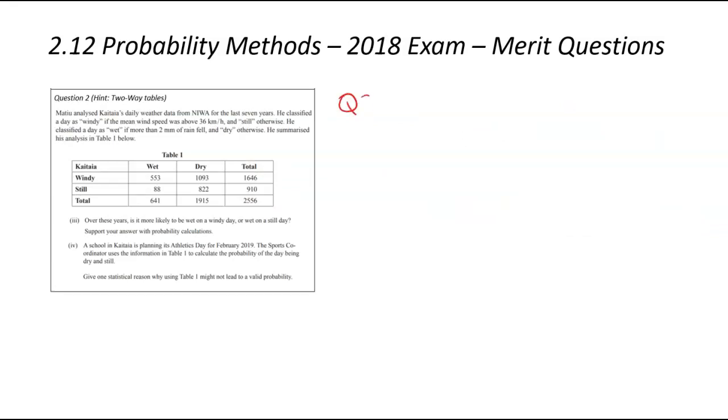We're now looking at question two. We're going to start with part iii. Reading through the context, we'll go through it quick. So we've got some data, weather data from NIWA. It's classified the days as windy or still based on the speed of the wind. It's classified if they are wet or dry based on the rainfall. Here are the results in the table. And you can see, there you go, it's a windy or still day, and that's the wet and the dry days up there. So over the years, is it more likely to be wet on a windy day or wet on a still day? Your answer should be supported with probability calculations. So to this question, we need to calculate the probability of those two things that are underlined, and then we need to check which one has a bigger probability, and that is the event that is more likely to occur.